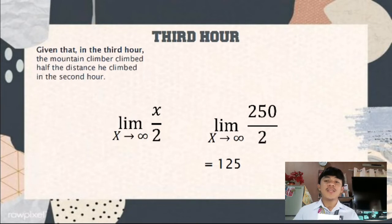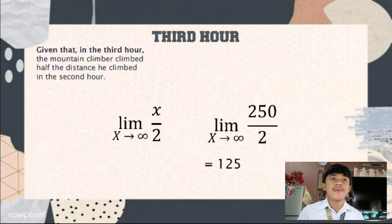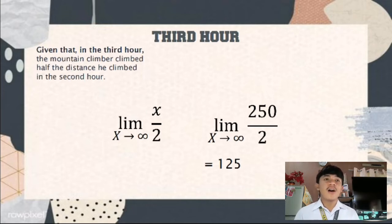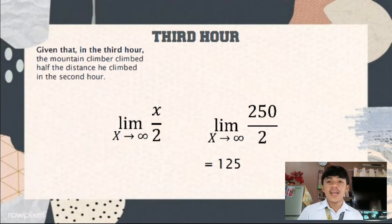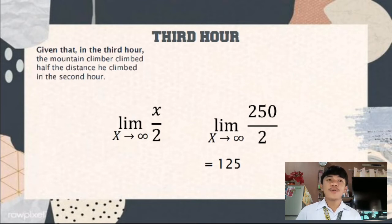Now let us proceed with the third round. Given that in the third round, the mountain climber climbed half the distance he climbed in the second round, and since in the second round the mountain climber was able to climb 250 meters high, all we have to do is divide 250 by 2. So the answer will be 125. Therefore, in the third round, the mountain climber was able to climb 125 meters high.